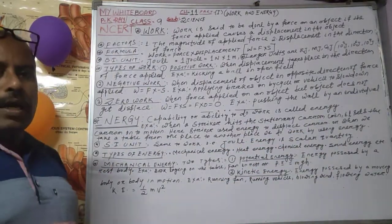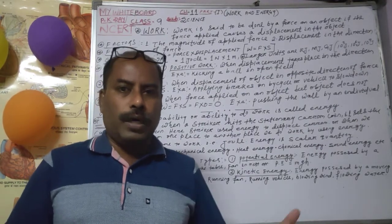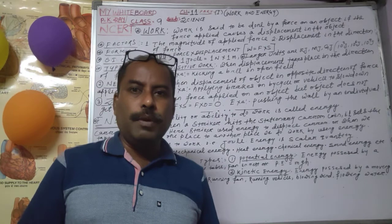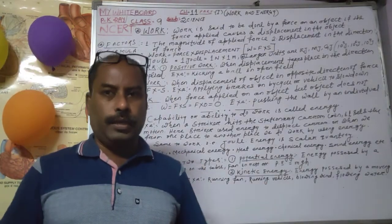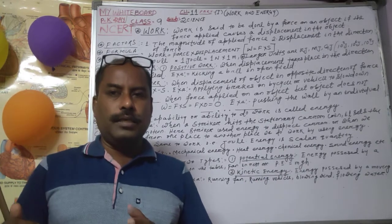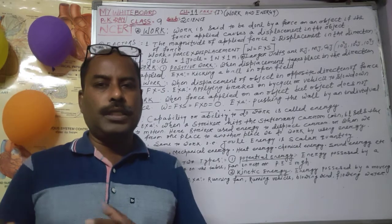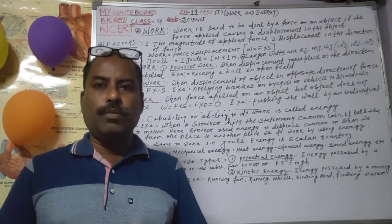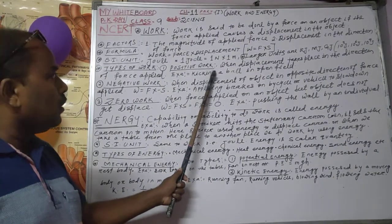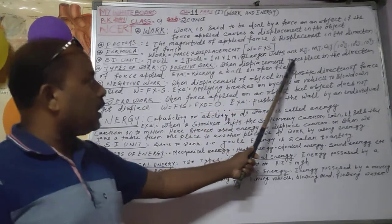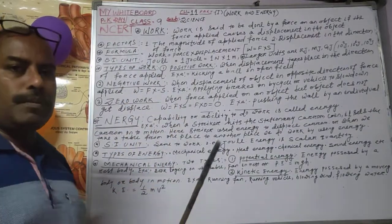Let us talk about the types of work — what type of work we do. Scientifically, we divide work into three categories. One is known as positive work, second is known as negative work, and third is known as zero work. What is called positive work? When displacement takes place in the direction of force applied, it is known as positive work.